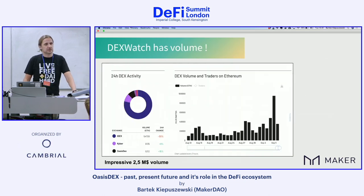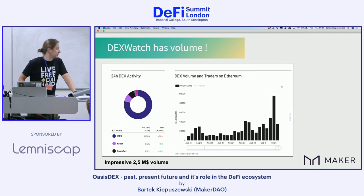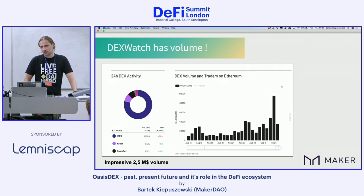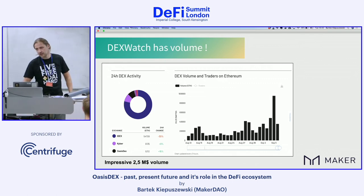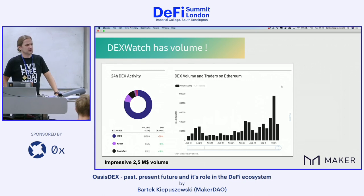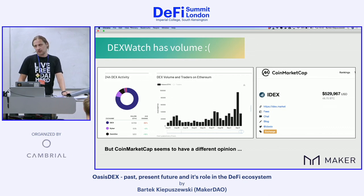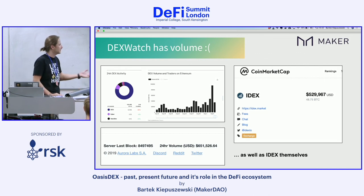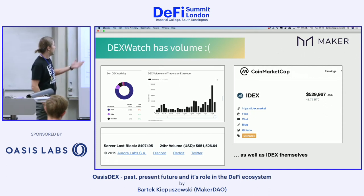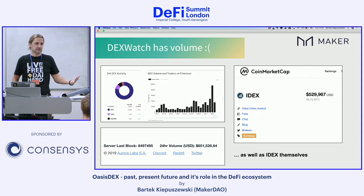DexWatch is a good one — the user interface is superb and there's a lot of potential. Looking at DexWatch, the top three is IDEX, Kyber, and us at number three, which I was really happy to see. But it made me think: the 24-hour IDEX activity is 54,000 ETH — that's about 2.5 million — which seemed quite odd. I checked CoinMarketCap and got a very different number. I went to IDEX themselves and got yet another different number. IDEX says 24-hour volume is 650 ETH and DexWatch says 54,000 ETH — which is five times that figure.